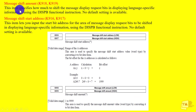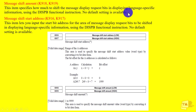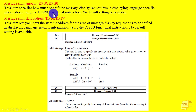This item specifies how much to shift the message display request bits when displaying language-specific information, using disk B. In the installation, use the appropriate settings.